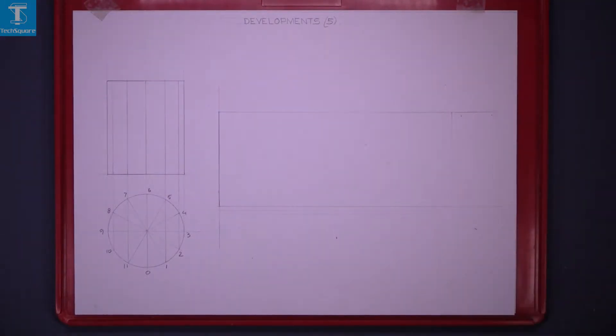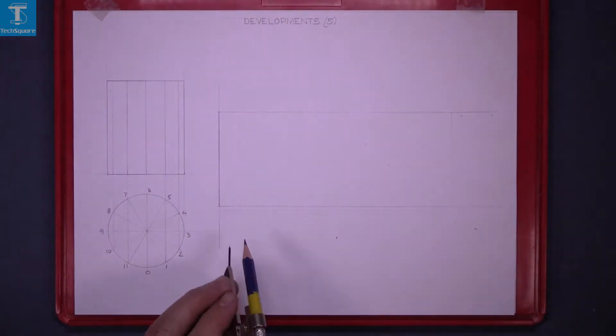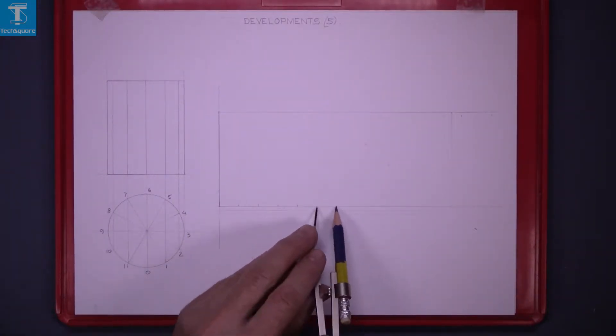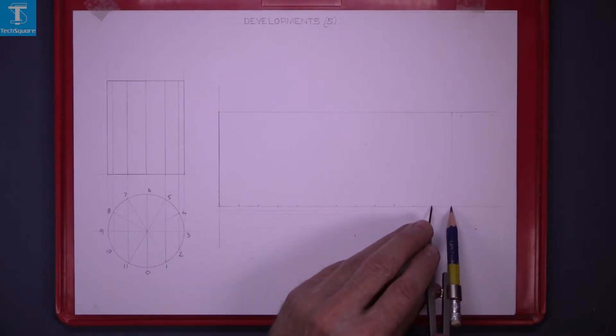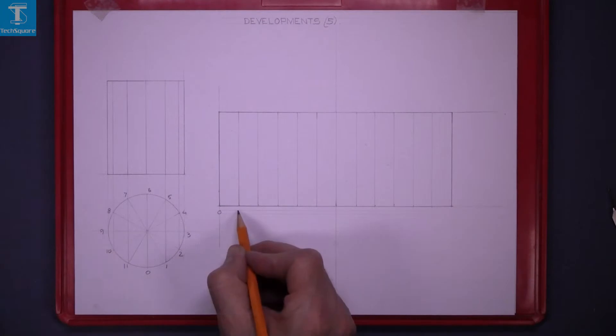To do that we set the compass to 1 twelfth of the circumference and mark it 12 times out along this line here. Line in the outline of the rectangle and index the generator.